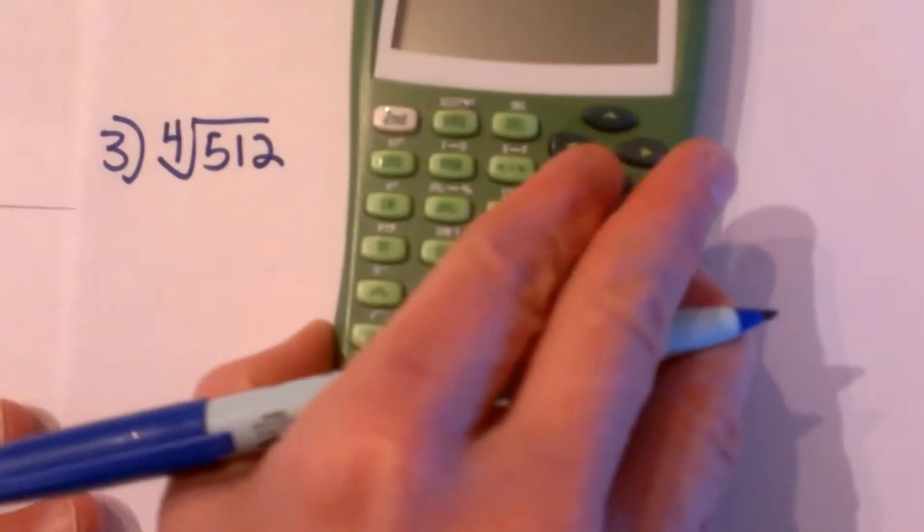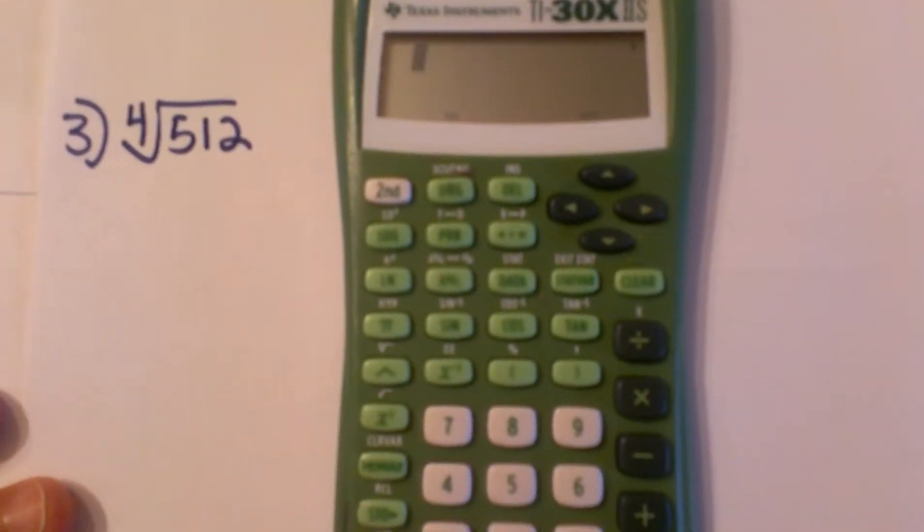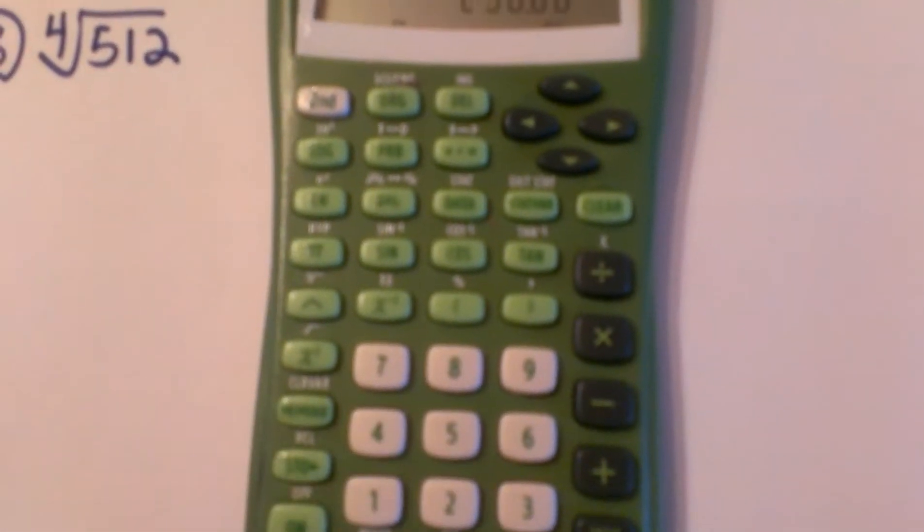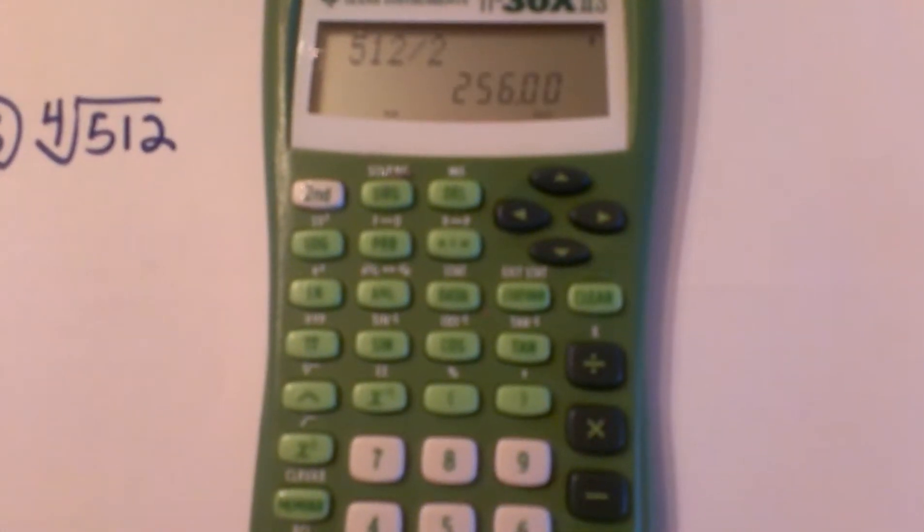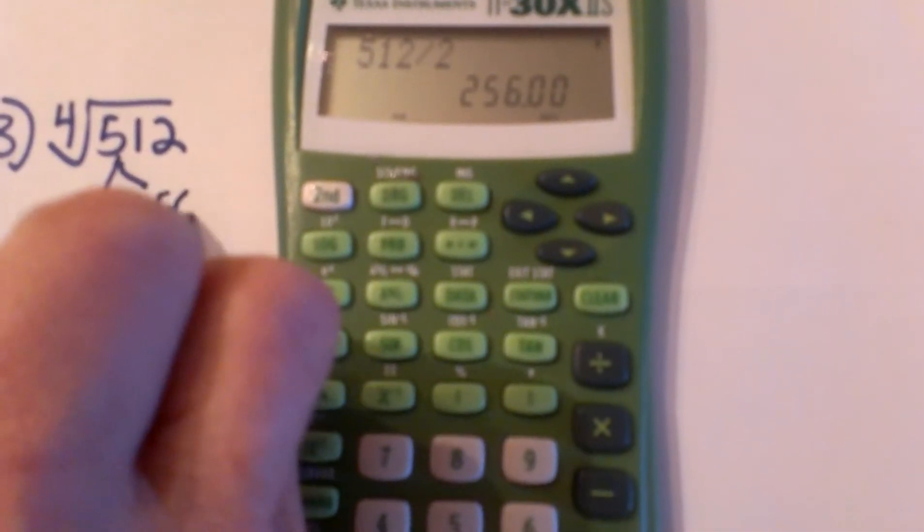Let's look at another fourth root. We are going to look at the fourth root of 512. Well, 512 is a little harder, so I am going to grab my calculator and I am going to divide 512 by 2, and it ends up being 256. So I am just making a factor tree and using my calculator to help me.